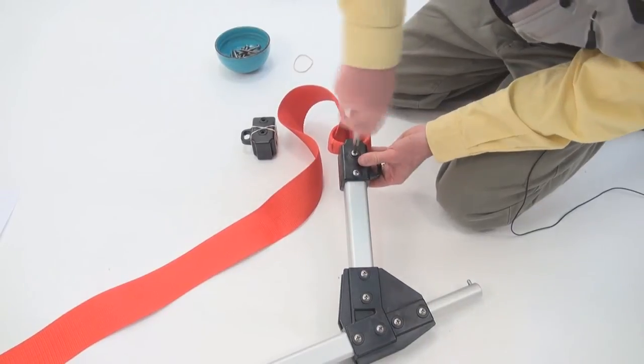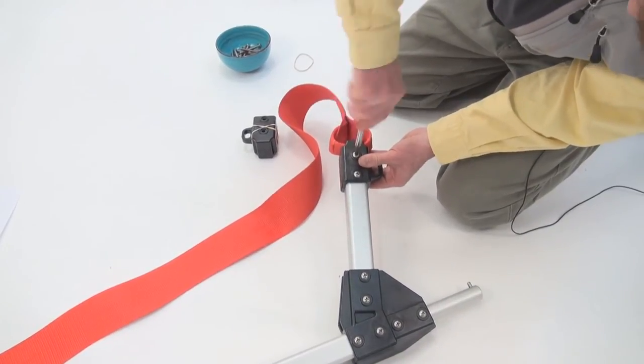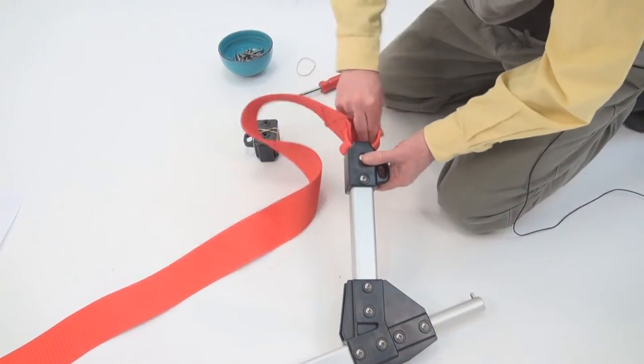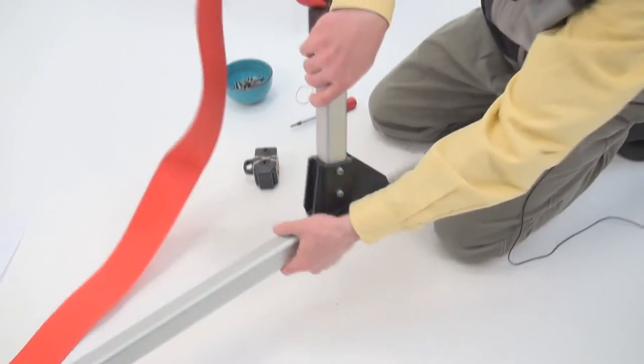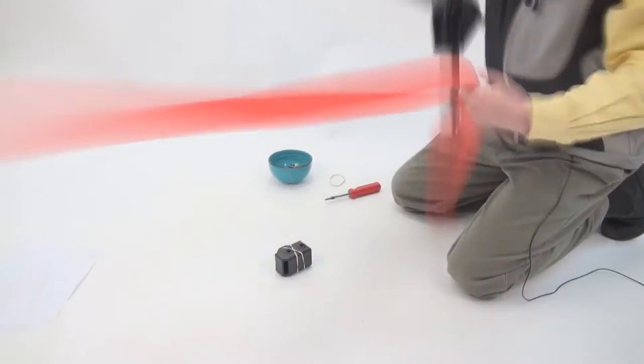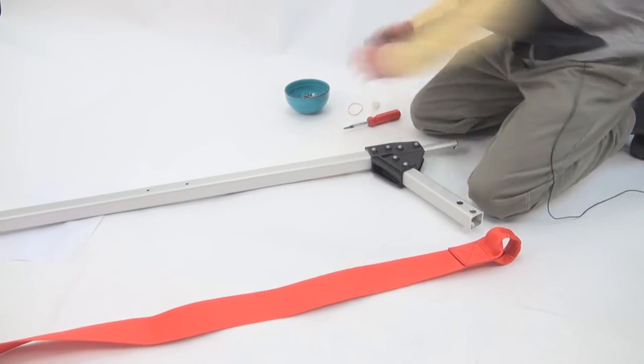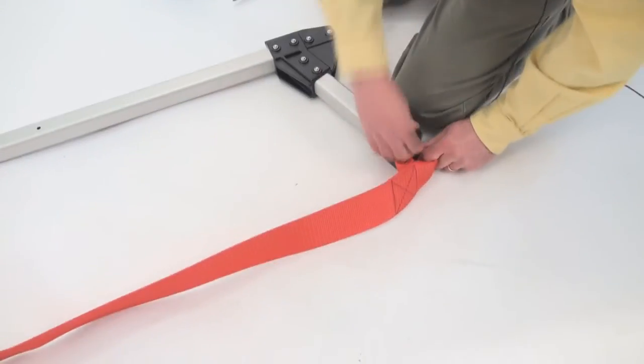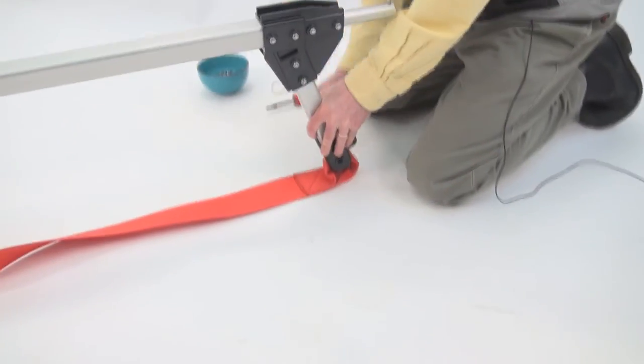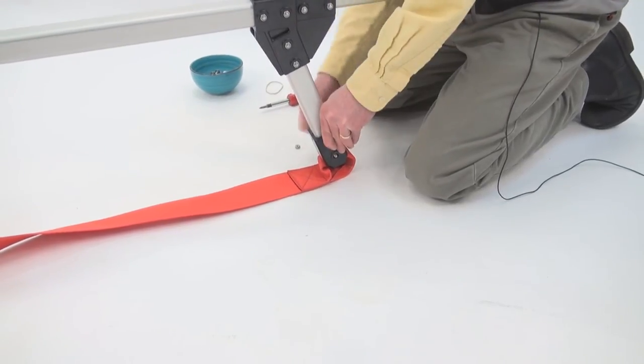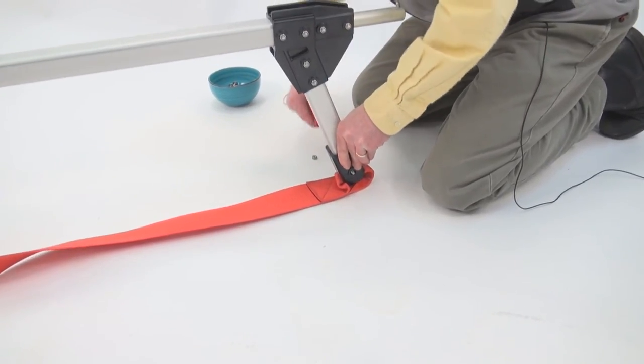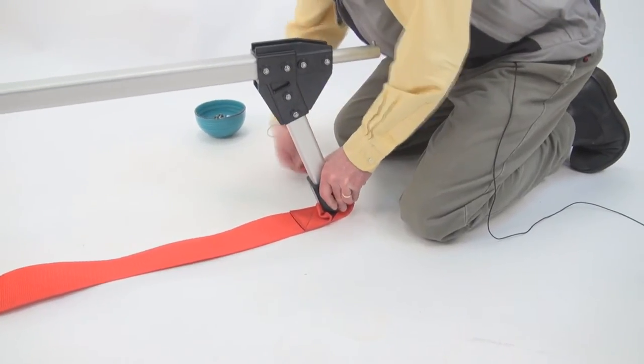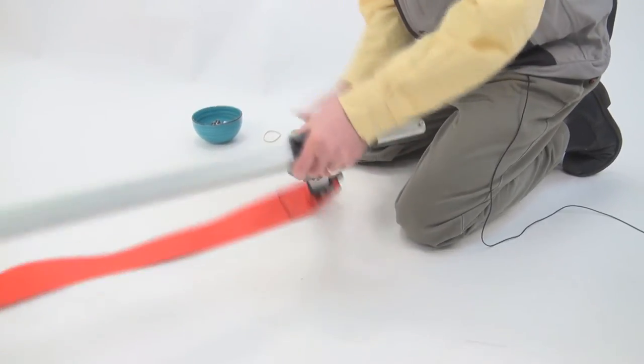So we're going to do the second one. We'll just bear down on this so it doesn't open. All right. So that's good. And we're simply just going to do the same thing to the other side. Okay. So there you have your back end assembly.